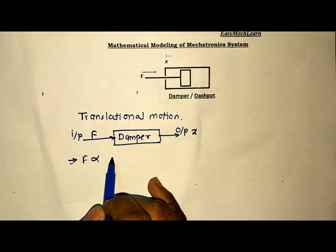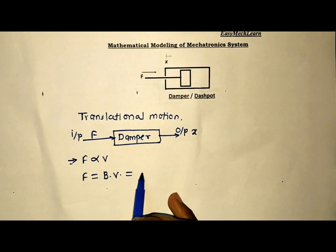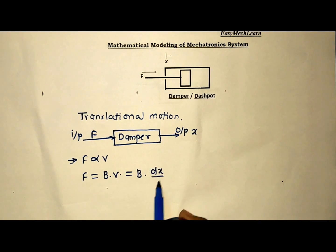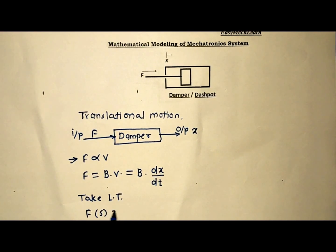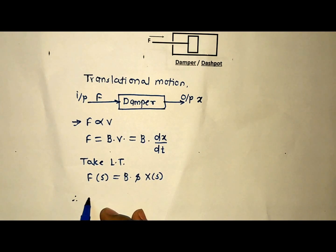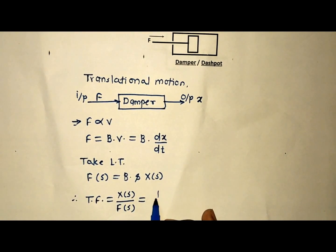Therefore F is equal to B times V, where B is the damping constant. Since velocity V is the rate of change of displacement, V = dx/dt, we have F = B·(dx/dt). Taking the Laplace transform: F(S) = B·S·X(S). The transfer function X(S)/F(S) = 1/(B·S). This is the mathematical modeling of the damper in translational motion.